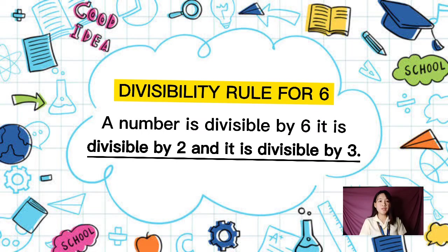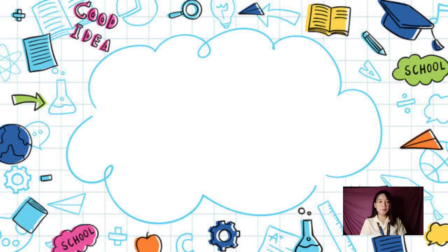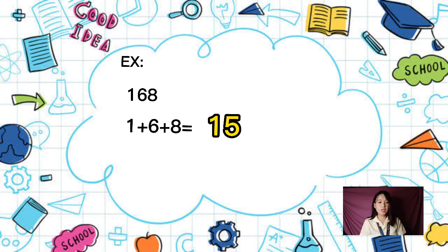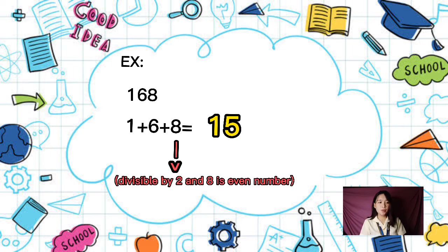A number is divisible by 6 if it is divisible by both 2 and 3. For example, 168: the sum of its digits is 1 plus 6 plus 8 equals 15, which is divisible by 3. And the last digit is 8, which is an even number, so it is divisible by 2 as well.